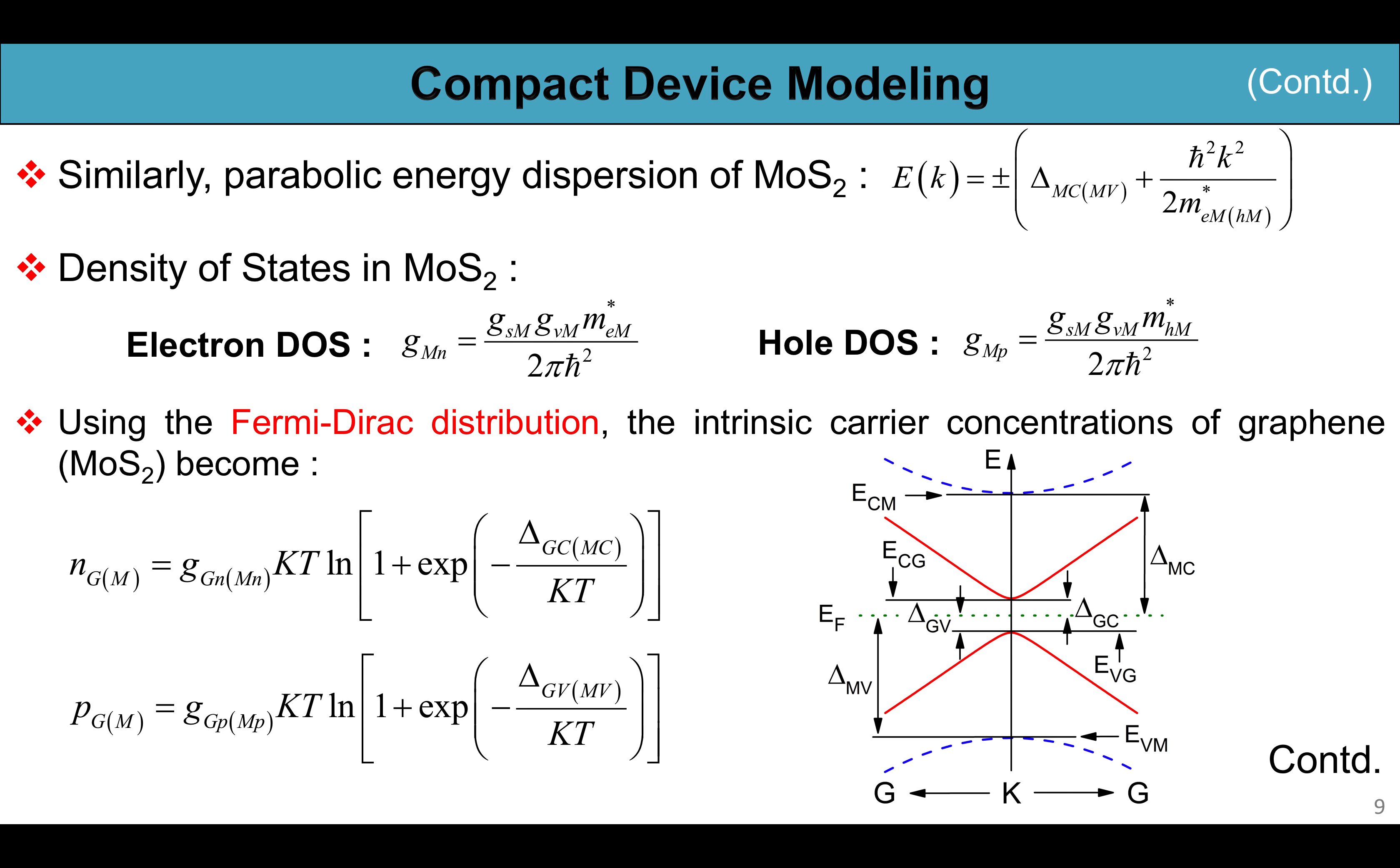Continuing to the compact device modeling, the parabolic dispersion of MoS2 can be approximated as this equation and similarly the density of states in MoS2 can also be calculated as the formulas shown here. Now we have used the Fermi-Dirac distribution instead of the Boltzmann approximation, and upon this approximation we get the intrinsic carrier concentrations of graphene and MoS2 as shown in the slide, and here we have referred all the band structure parameters in this figure.